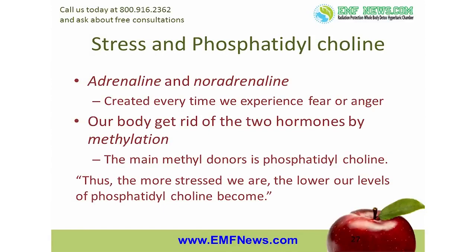Adrenaline and noradrenaline are two other examples. These two hormones are created every time we experience fear or anger. While they are useful in emergencies, if they stay in the body for more than a short time, they can cause terrible damage. Methylation is the pathway the body uses to get rid of both adrenaline and noradrenaline, and one of the main methyl donors for the methylation pathway is phosphatidylcholine. Thus, the more stressed we are, the lower our levels of phosphatidylcholine become. These are just two examples of how toxins, both internal and external, can cause us to become chronically deficient in glycine, taurine, and phosphatidylcholine.